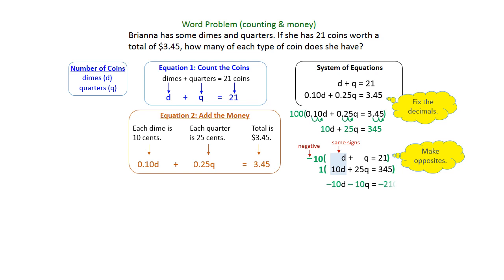So now multiplying that negative 10 through the top equation gives you negative 10D minus 10Q equals negative 210. And then multiplying 1 on the bottom basically does not change that equation. So that bottom equation stays the same.